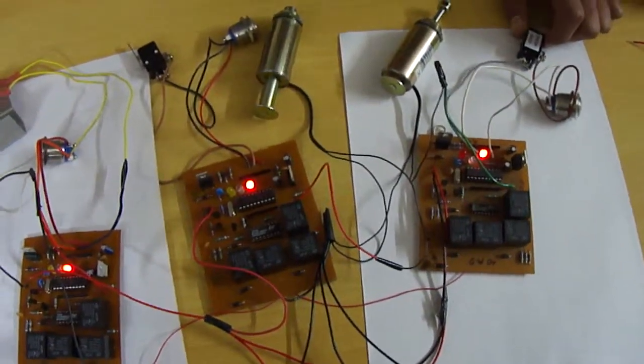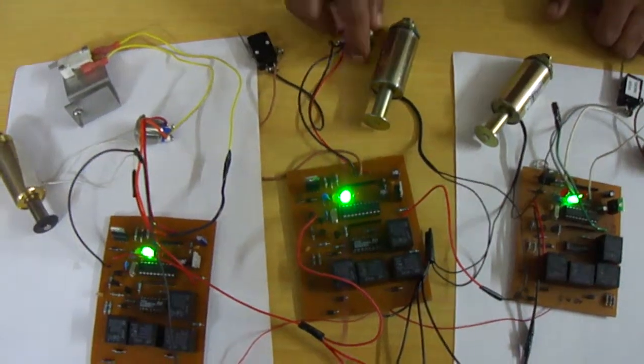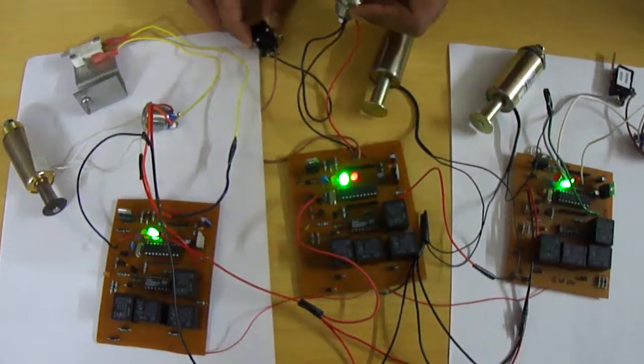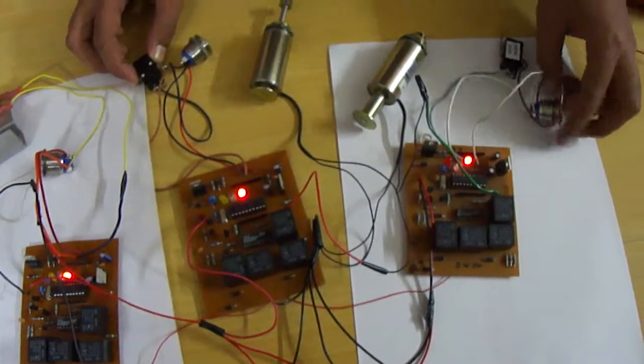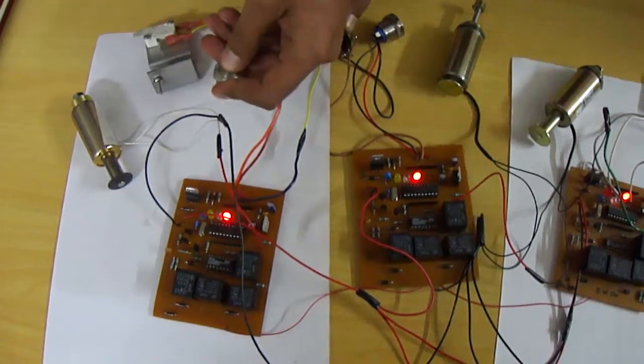Now we will see the same status for floor number two. When he is pressing floor number two button, the solenoid operates. Now try floor number one. It is not opening. Floor number three, that is also not opening.